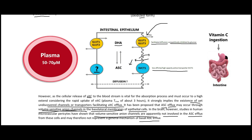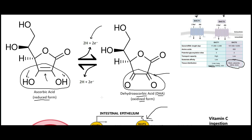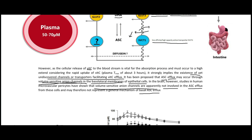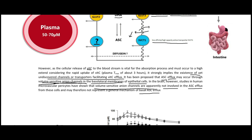It's possible the efflux occurs by passive diffusion, or possibly via the DHA form, which may be able to passively diffuse through membranes because it won't be ionized. At pH 7, the ascorbic acid form is actually ionized — the hydrogens come off, making it into a negatively charged ion — which is why volume-sensitive anion channels seem to be what is transporting the ascorbic acid out of the cell in epithelial tissues.